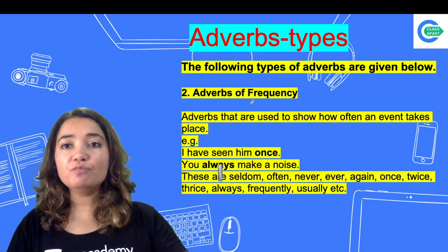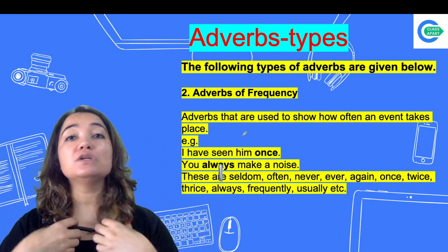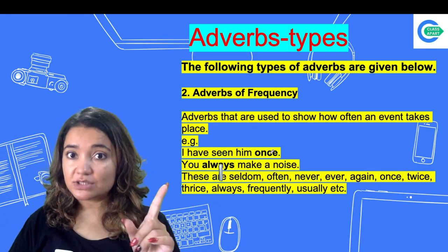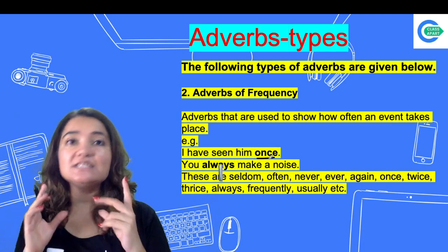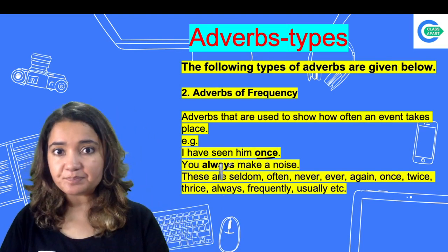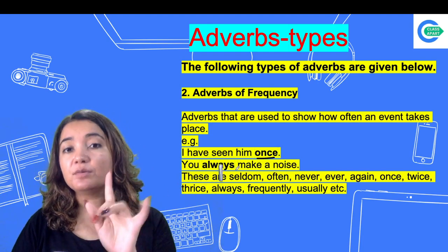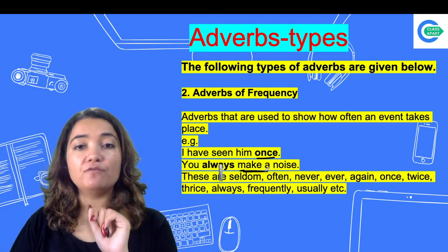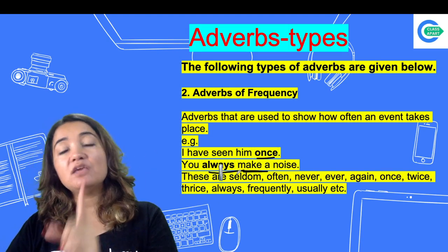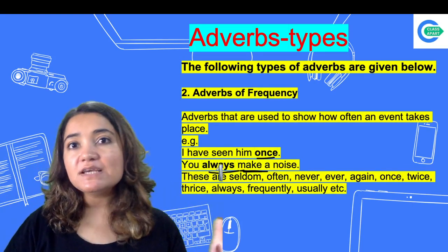Adverb of frequency — this shows you that when there is any event, how often does it take place. The name is self-explanatory. For example: 'I have seen him once.' Here 'once' is your frequency — you have seen him, but how many times? One time, so 'once' tells frequency. Another example: 'You always make noise.' Here 'make' is your verb, and 'always' tells how many times — so 'always' is your adverb of frequency.